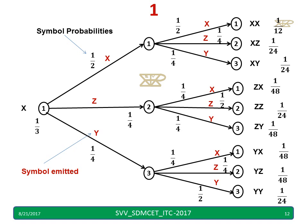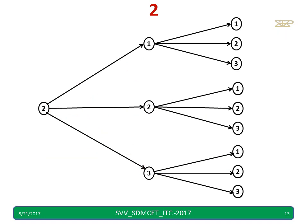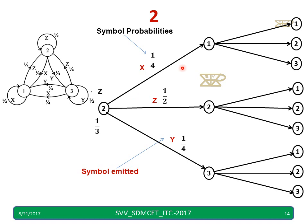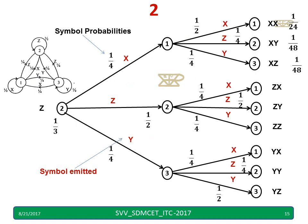Similarly, we have to repeat the same tree structure starting from state number 2, going through all transitions 2 to 1, 2 to 2, 2 to 3 and their second-level branches. Fill in all the probabilities and symbols. Then repeat again for state number 3, covering all transitions 3 to 1, 3 to 2, 3 to 3 and their branches. Pause and complete these calculations before continuing.